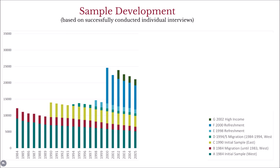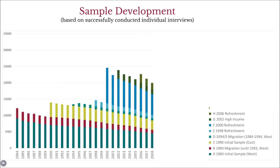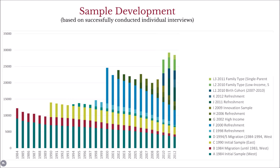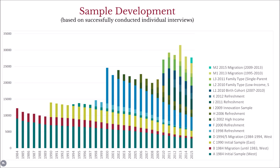The innovation sample was introduced in 2006. Between 2010 and 2011, three samples were added focusing on particular family types, including low-income families, families with multiple children, and single-parent households. After another smaller refresher sample in 2012, two special migration samples were introduced to represent immigration to Germany between 1995 and 2009. The last two samples were added to represent refugees who arrived in Germany between 2013 and 2015.